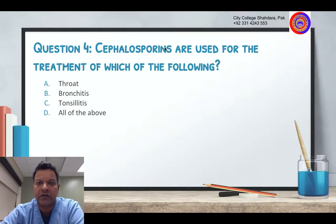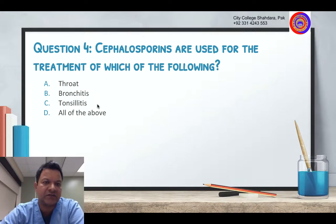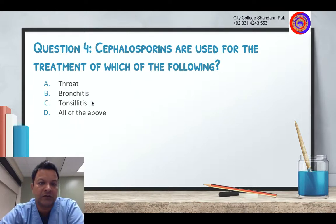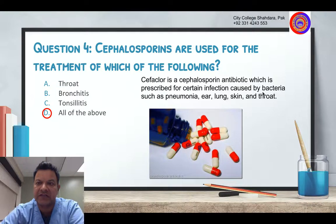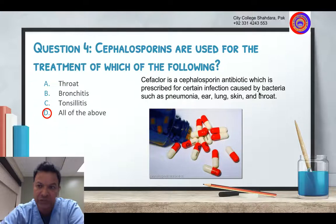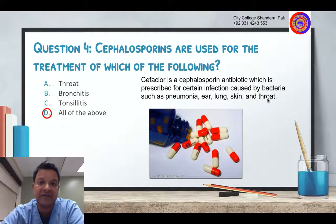Question 4: Cephalosporins are used for the treatment of which of the following? Cephalosporin is an antibiotic that can be used for throat infection, bronchitis, and tonsillitis. Bronchitis is infection of the lungs. The answer is all of the above. Cephalochlor is a cephalosporin antibiotic prescribed for certain infections caused by bacteria — such as pneumonia, ear, lung, skin, and throat infections. When bacteria cause these infections, you should use antibiotics.